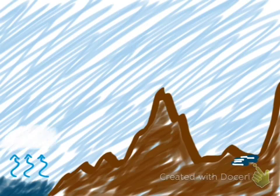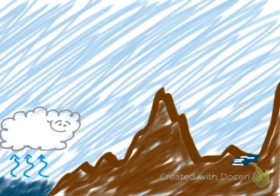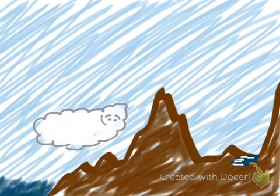So this orographic effect basically explains how moisture gets trapped on the western side of the Sierra Nevada mountains, leaving California moist and the Great Basin bone dry. Here's how it works. Moisture rises up from the ocean,